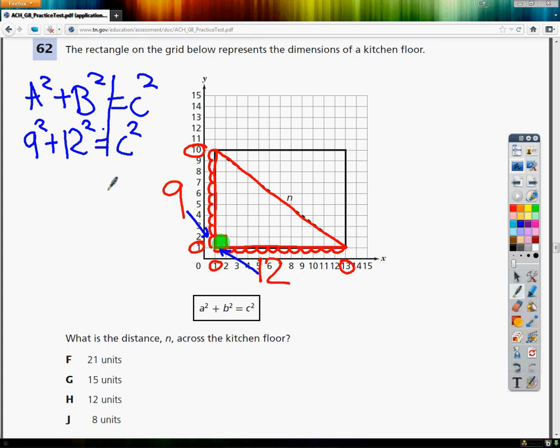From here, I'm basically just solving an equation. 9 squared is 81. 12 squared is 144. And I want to find out what 81 plus 144 happens to be, and it turns out to be 225.